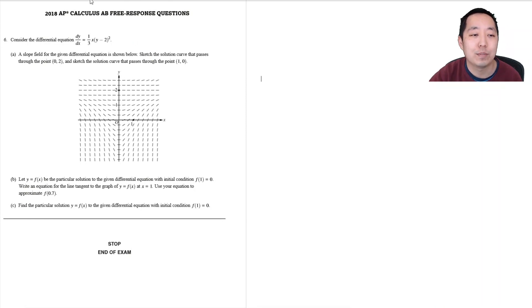Hi all, this is Alan with Bothell STEM Coach and today we're going to be continuing on with the 2018 AP Calculus AB free response questions. We're going to be looking at number 6 here. So consider the differential equation dy over dx equals one third x times y minus two quantity squared.